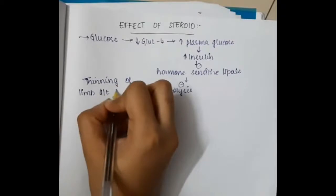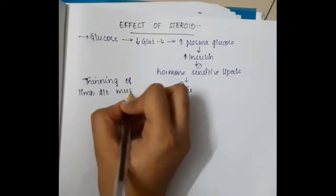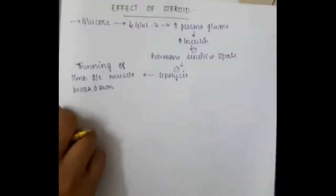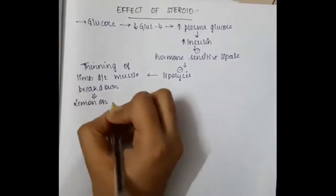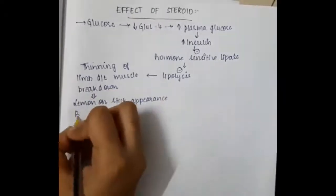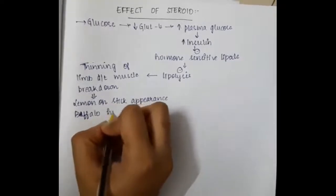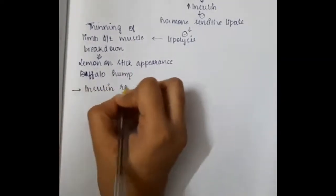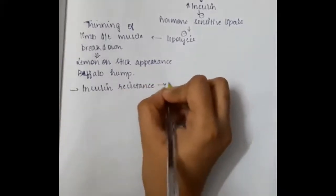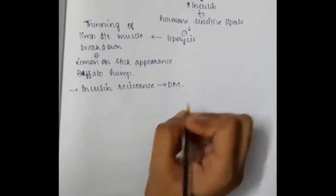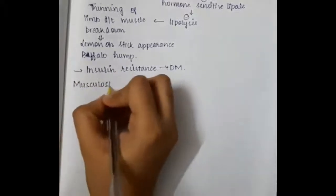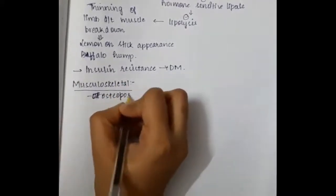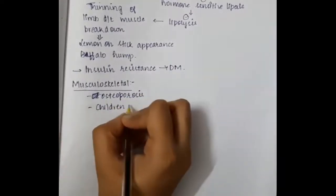Increased insulin inhibits hormone-sensitive lipase, which in turn inhibits lipolysis. This leads to thinning of the limbs due to muscle breakdown and increased central fat deposition, resulting in a lemon-on-stick appearance and buffalo hump. Insulin resistance and diabetes mellitus are also seen.